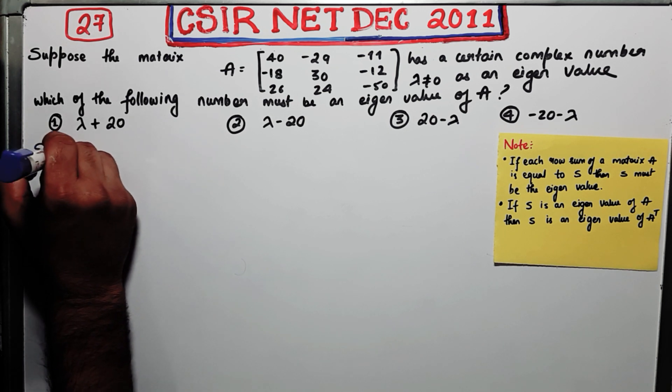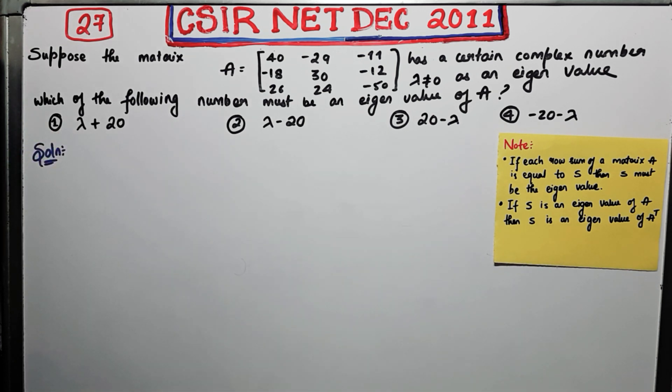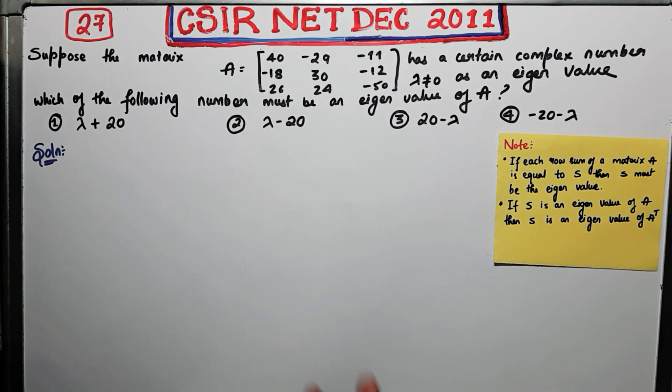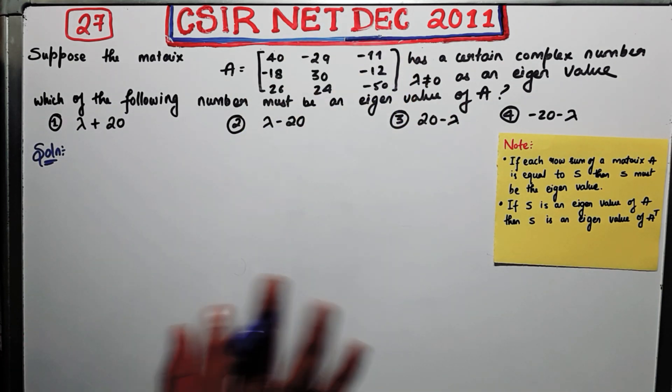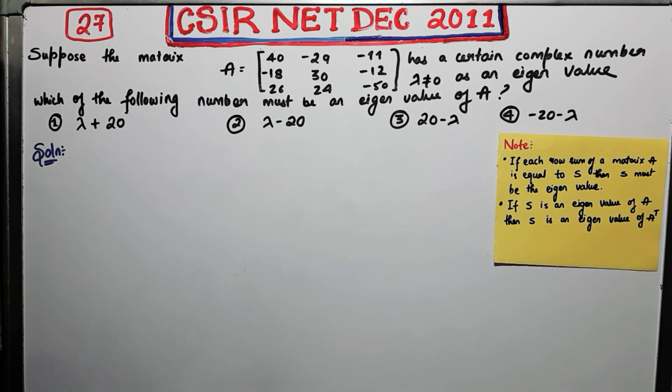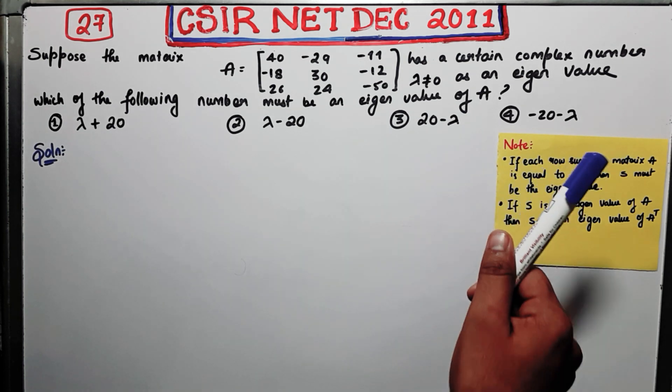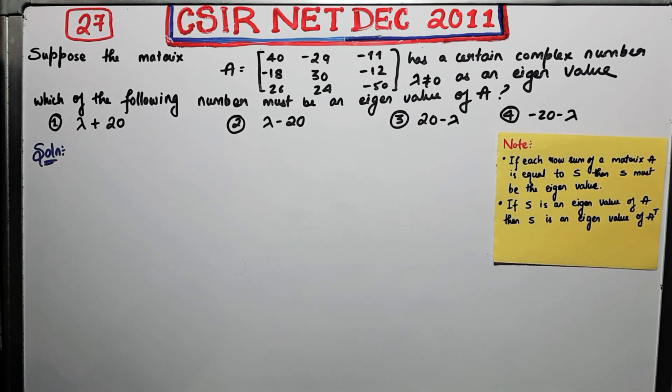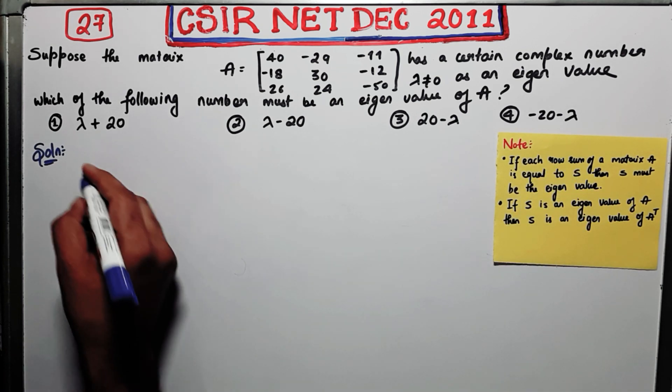So this second note is actually not helpful, but I have just written it down for your reference. To figure out that if each column sum is equal, then also that number, the sum of column, is again an eigenvalue like row. So this not only happens for row only, it happens for column also.